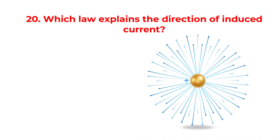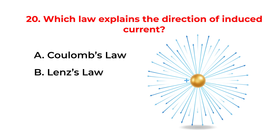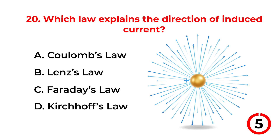The unit of electric field intensity is: A. Newton per coulomb. B. Watt per second. C. Joule per meter. D. Ohm per meter.